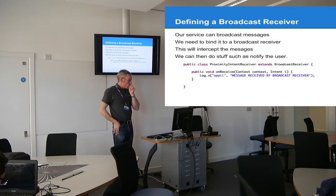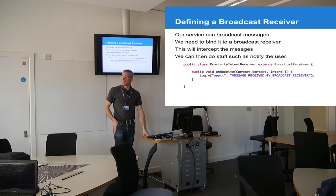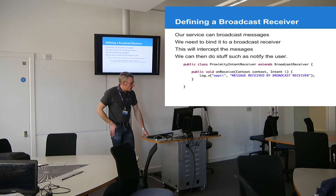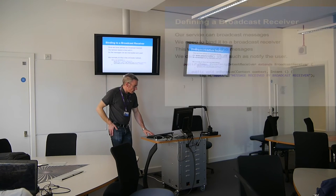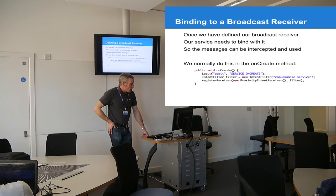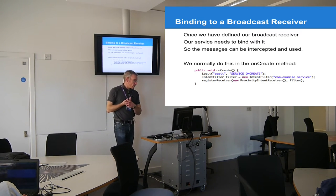The BroadcastReceiver has one key method: public void onReceive. This gives you the context and the intent — the context is 'this', and the intent is whatever intent triggered it. We can listen out for messages, but before we do that we have to bind to the receiver.